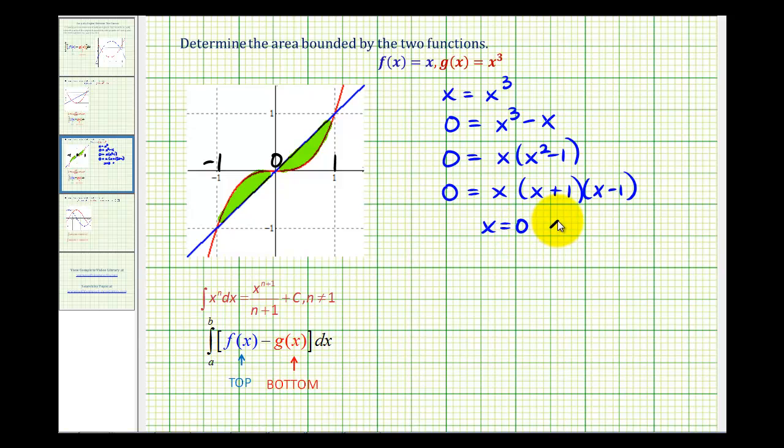So there are three solutions to this equation. We have x equals zero, x equals negative one, and x equals positive one. Again, notice how these values match the x-coordinates of the points of intersection we see here on the graph.